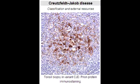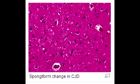In Creutzfeldt-Jakob disease, the brain tissue develops holes and takes on a sponge-like texture. This is why it is referred to as a spongiform cortex.